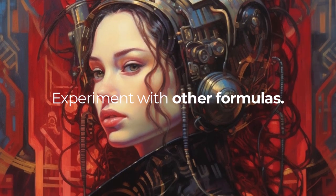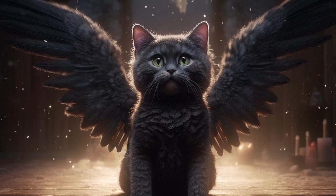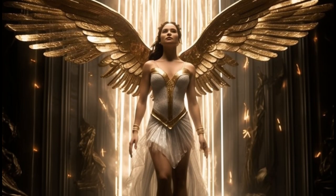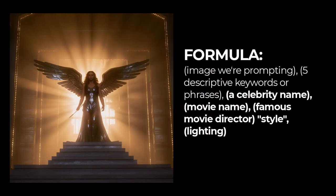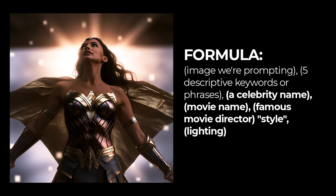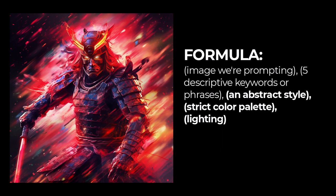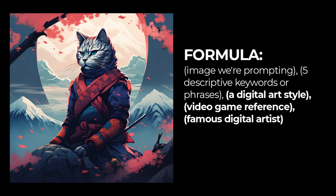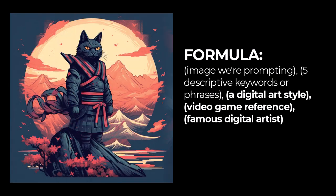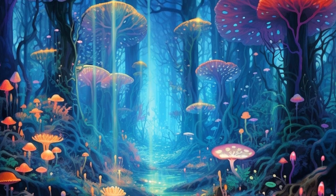You can start to write completely different formulas depending on the results you want. I did one for the image with descriptive words, but added celebrity name, movie name, and a famous movie director with style and lighting for some pretty unique results. I've also changed to simply an abstract style with a strict color palette and lighting, or even a digital art style with a video game reference and a famous digital artist. Anything you can think of you can experiment with to see what ChatGPT gives you and get some pretty unique styles.